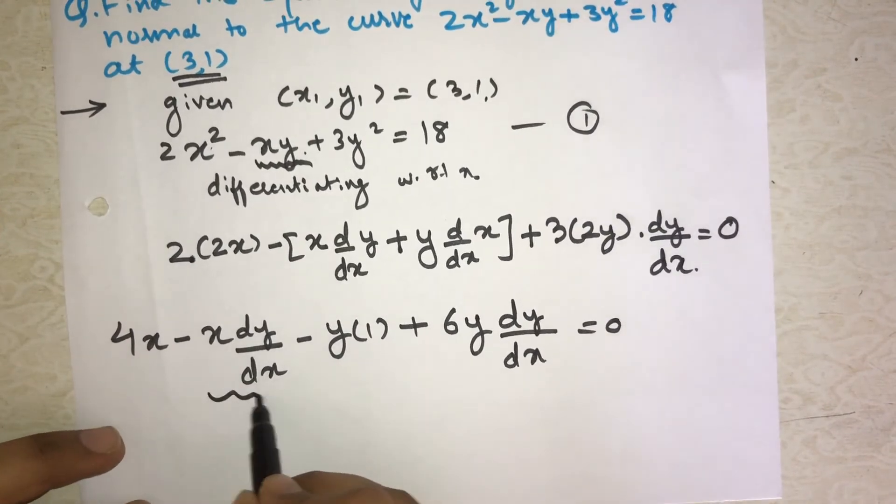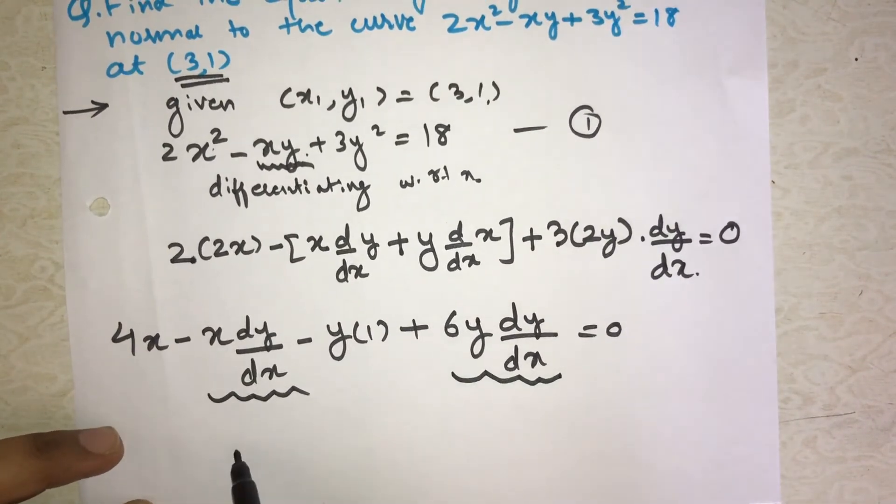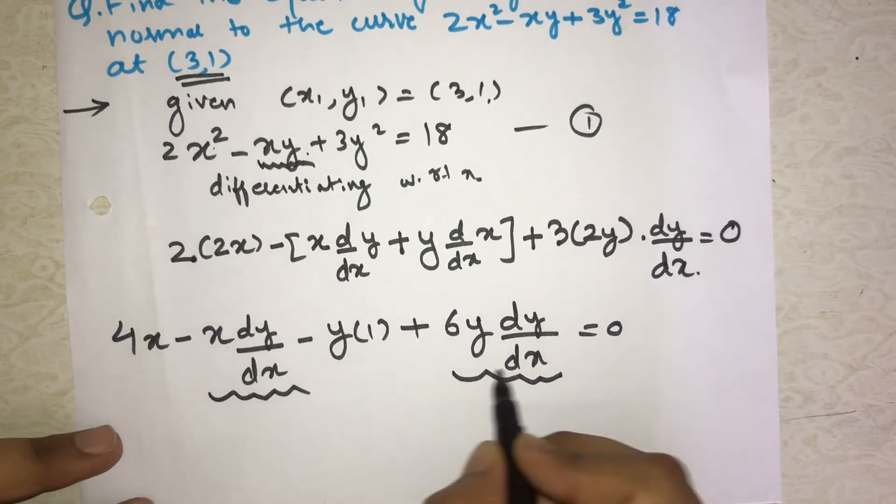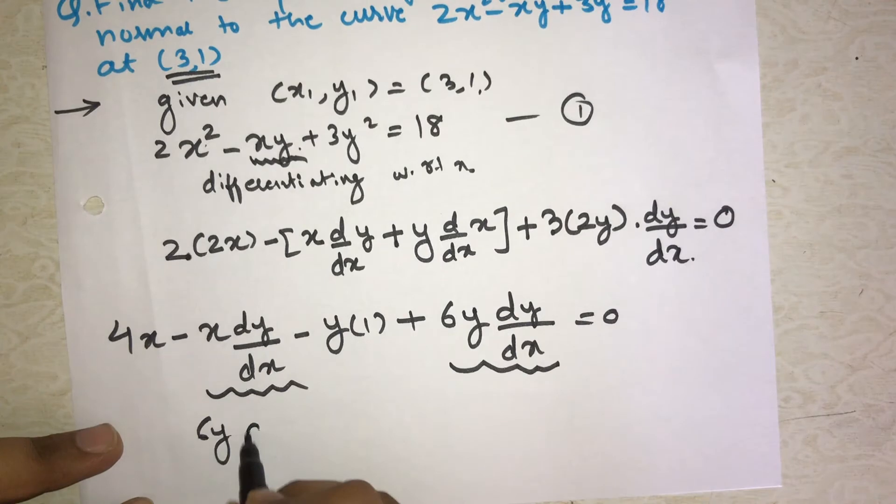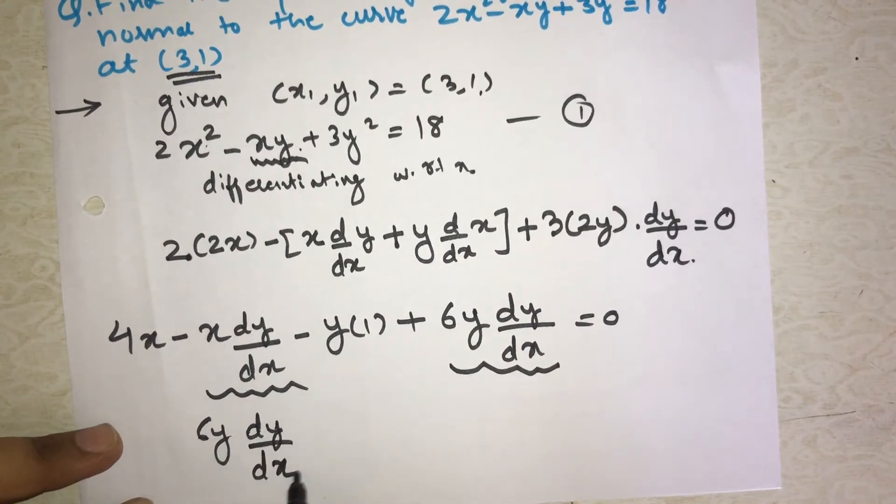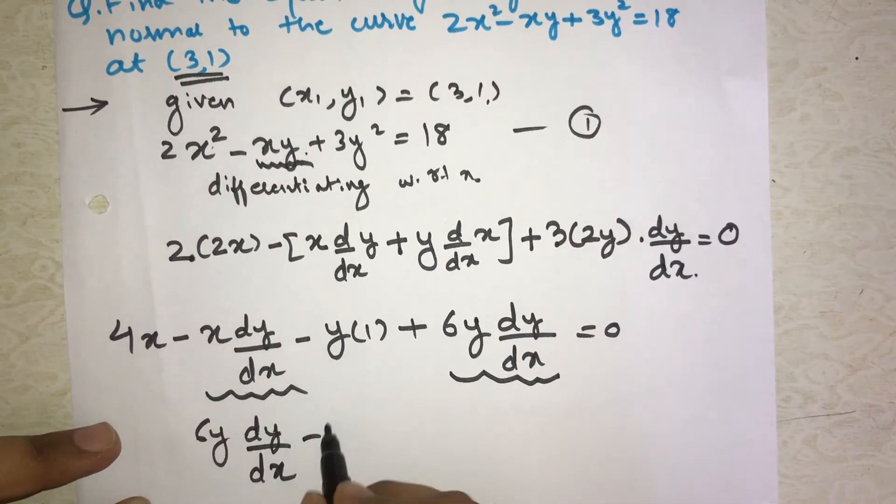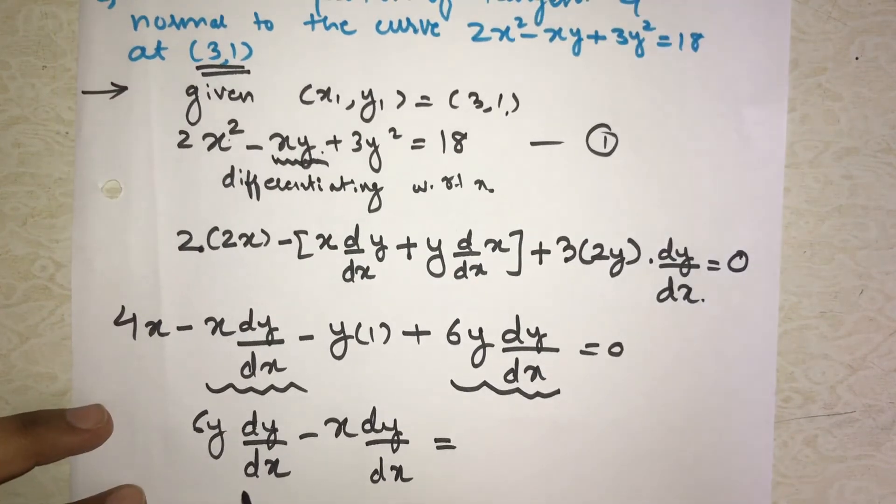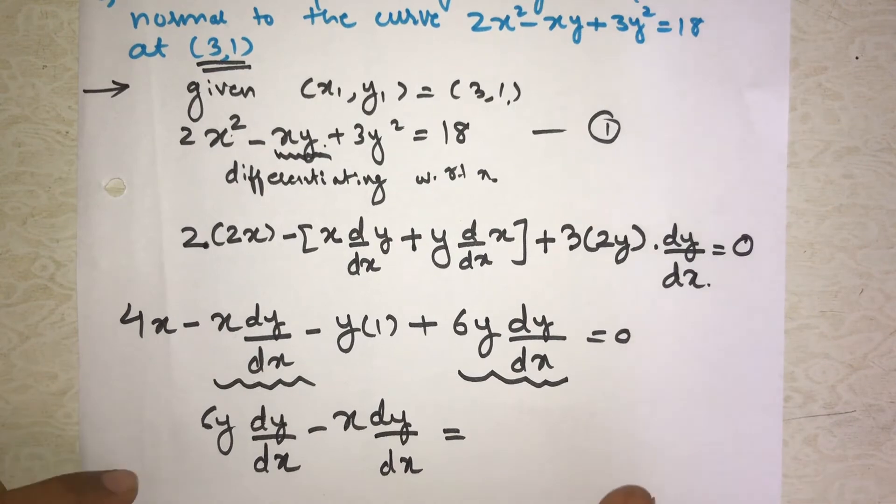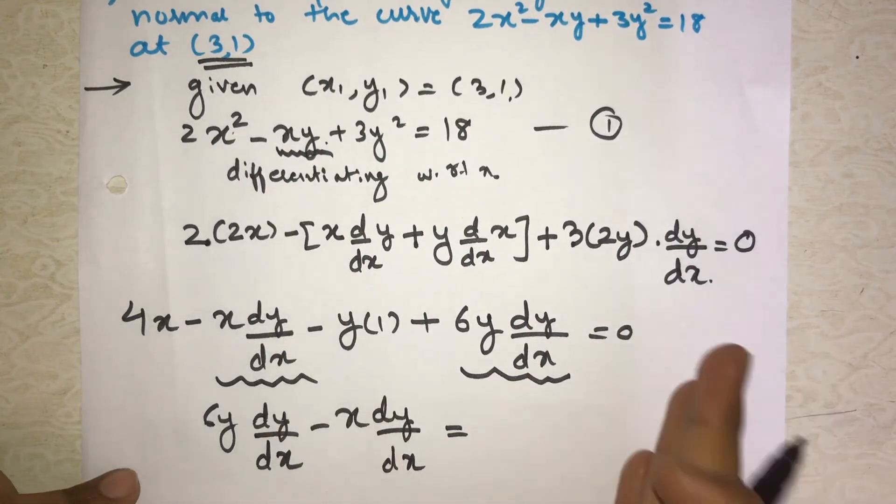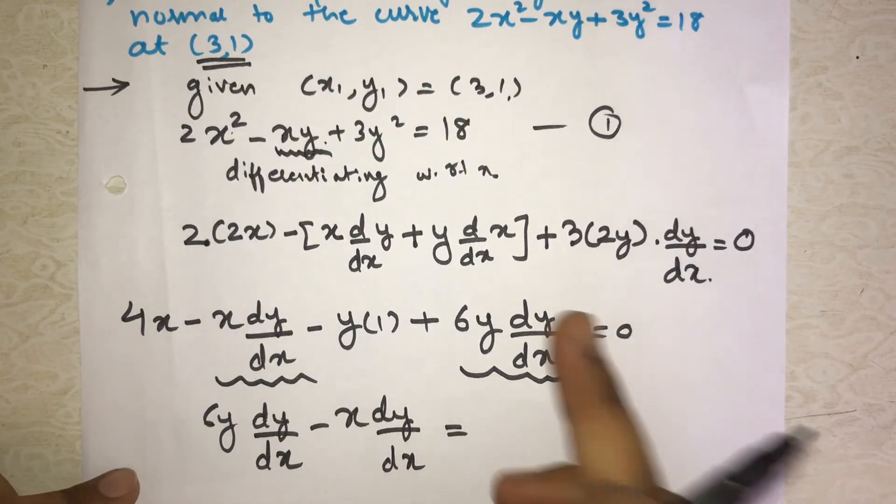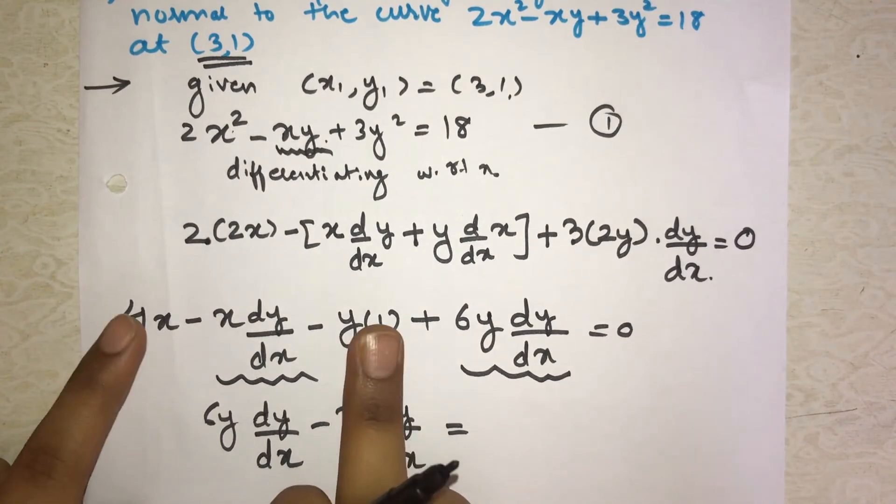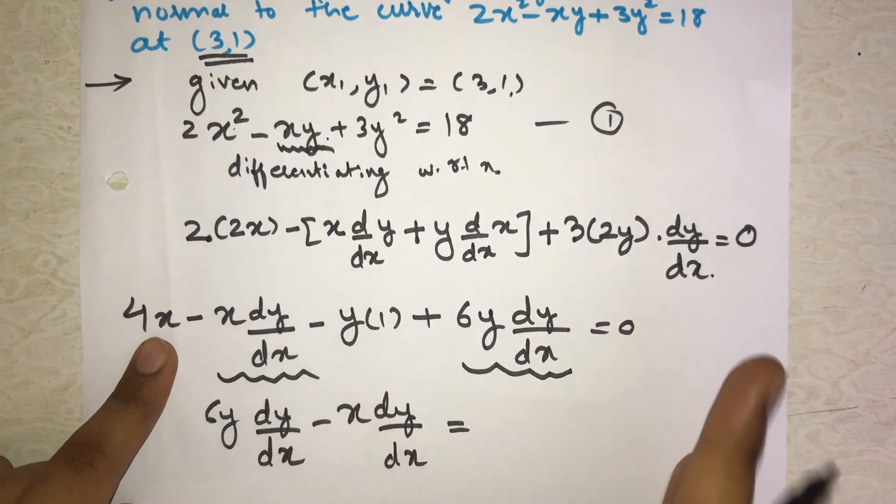Then simplify: 4x minus, now open the bracket, so x dy/dx minus (minus times plus will be minus) minus y. What is d/dx of x? It is 1. Then plus 6y times dy/dx equals zero. How do we solve this? All the dy/dx terms we collect on the left side.